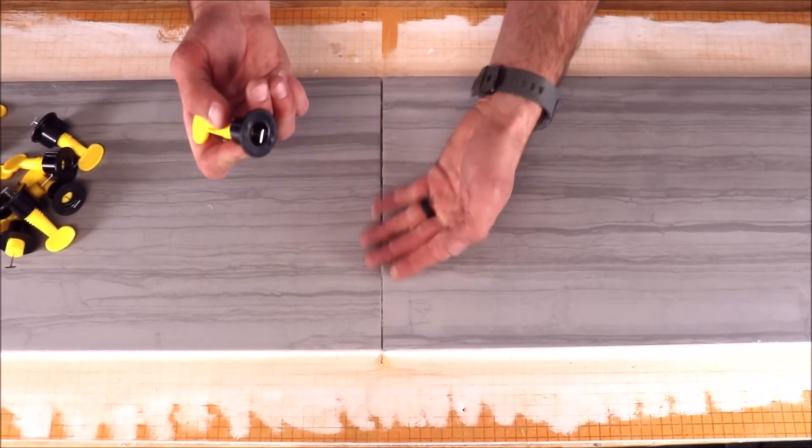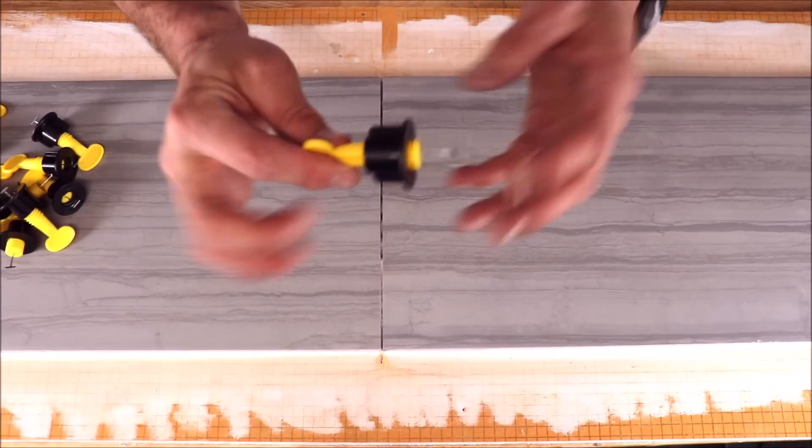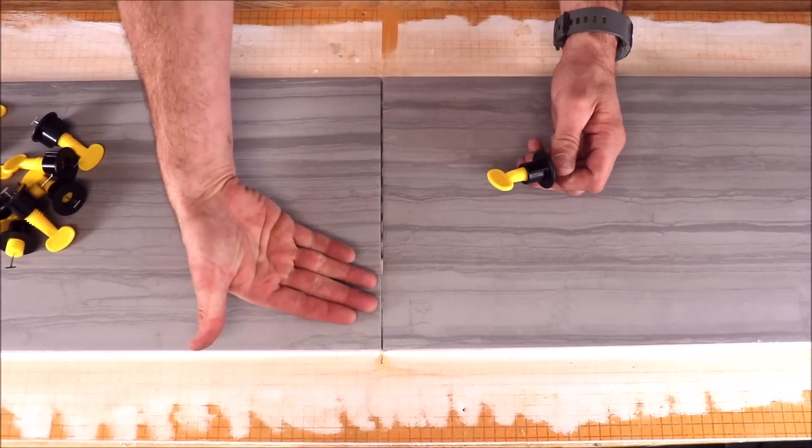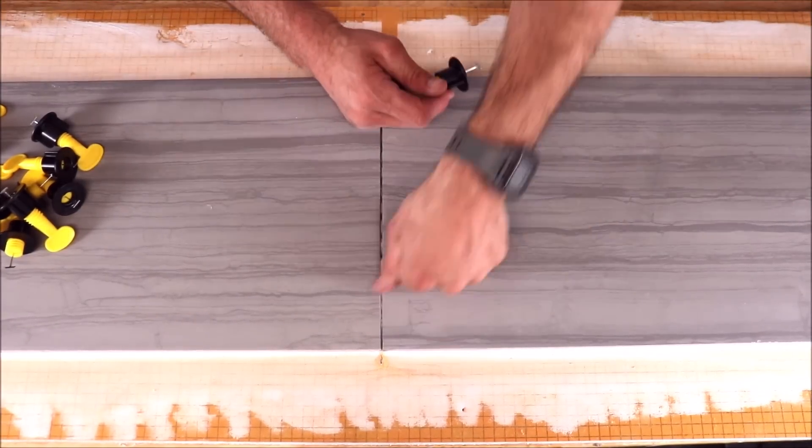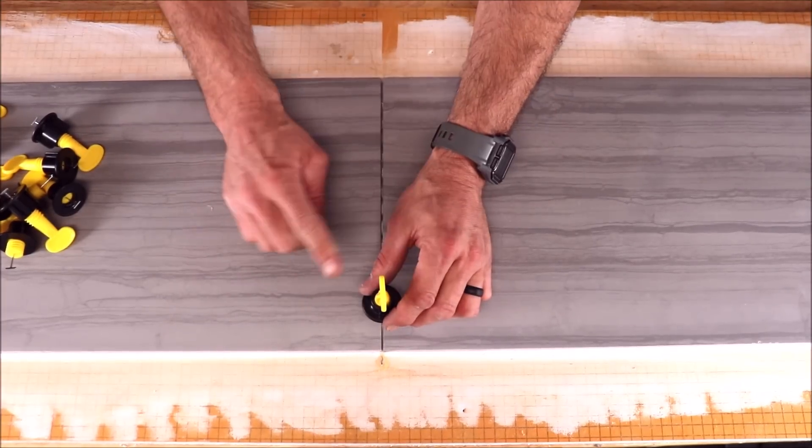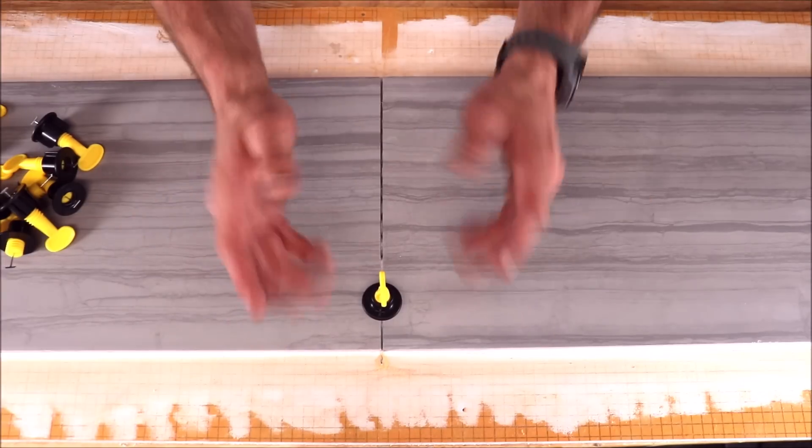Because of the thinset mortar that is embedded in this grout joint, this type of leveling tool is best used as a recovery tool if you break a clip. Rather than having to pull a tile, insert a new clip and reinstall, you can simply use this leveling tool to level out the tiles and move on with your installation.